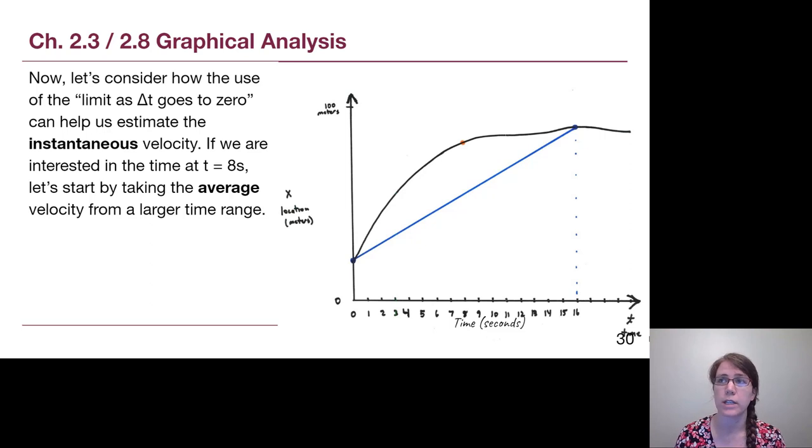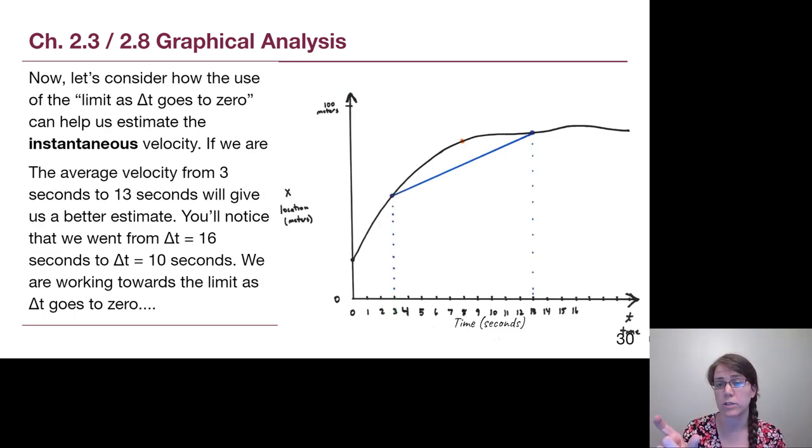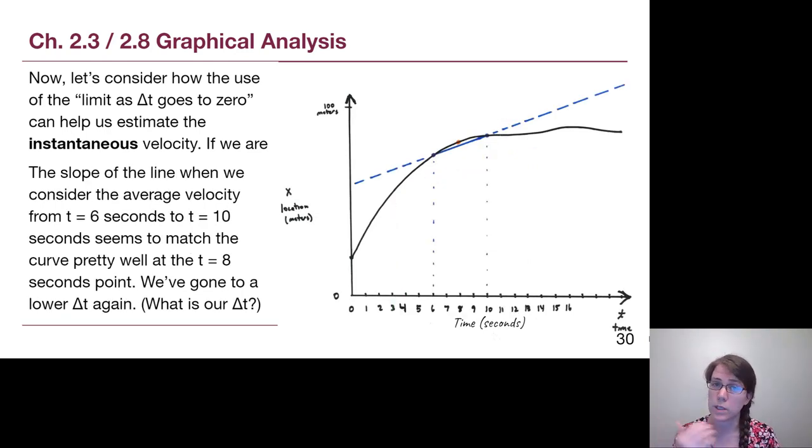So let's consider our understanding of average velocity and how it helps us to work towards instantaneous velocity. If we're interested in that t equals 8 seconds point, we can take points along the graph on either side of it, connect them and get the average velocity over that time frame from 0 seconds to 16 seconds. If we want a better estimate though we take a smaller time range that still has to be centered around our key point. So now we're taking the average velocity from 3 seconds to 13 and Δt went from 16 seconds down to 10 seconds. We can bring it down even further to 4 seconds. We see what we start to mean by this limit as the value goes to 0.